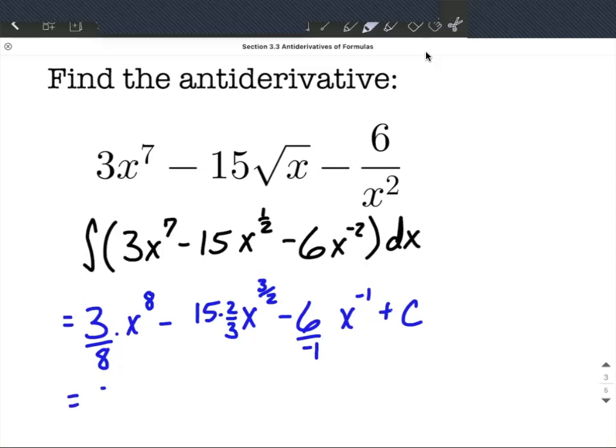Alright, so what's the best answer possible? Well, let's clean up just a little bit. I can go ahead and say that 15 is in the numerator, so I can think 15 times 2 makes 30 thirds x to the 3 halves. And then negative 6 divided by negative 1 makes positive 6 x to the negative 1 plus c.